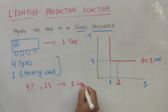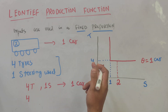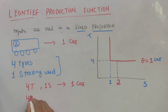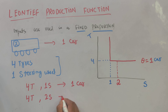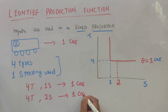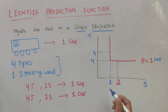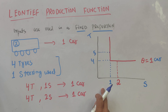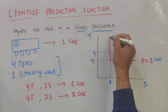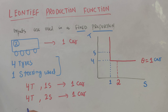If I keep the units of tires the same and unilaterally increase the units of steering wheel, I am still on the same isoquant and will be able to produce only one car. Likewise, if I increase the units of tires to five but do not increase the steering wheel by the same proportion, we are still on the same isoquant — five tires and one steering wheel still produces only one car.